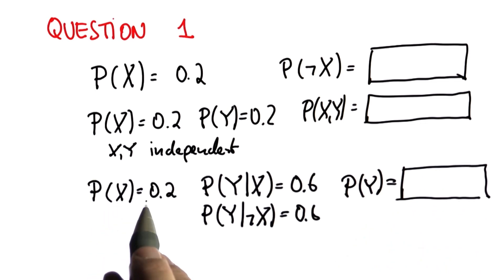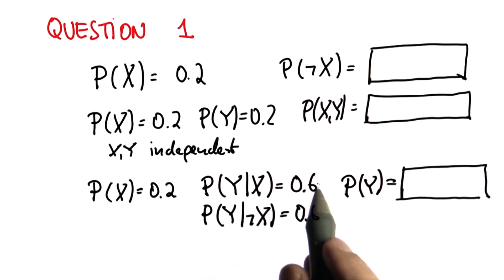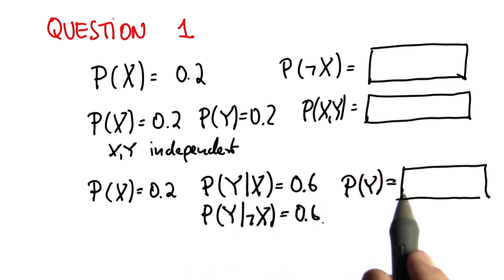And we have a variable P of X with probability 0.2. And we have two conditionals, P of Y given X and P of Y given not X, both 0.6. What's the probability of Y? Here you have to apply total probability.